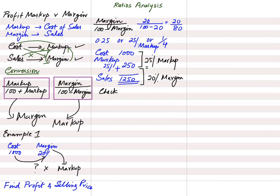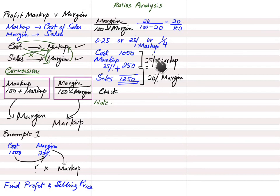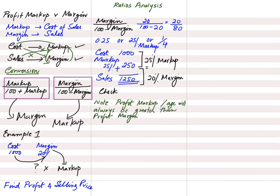There are two methods of expressing profit. If we apply profit on the cost figure, that percentage is known as markup. If we apply a percentage on selling price, that percentage is known as margin. Note that in this question, markup percentage is greater at 25% and margin percentage is lesser at 20%. This remains true always — markup percentage is always greater than margin percentage.